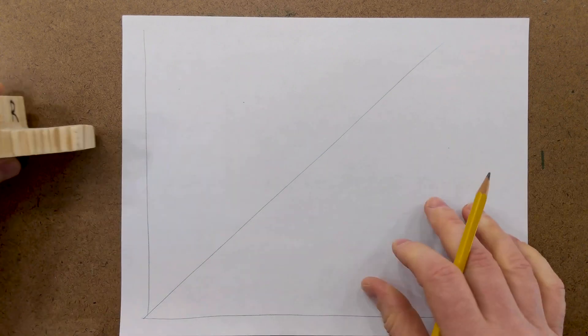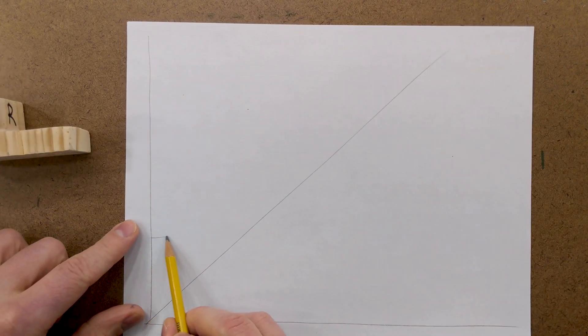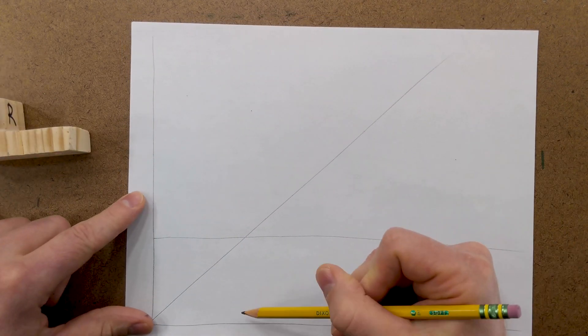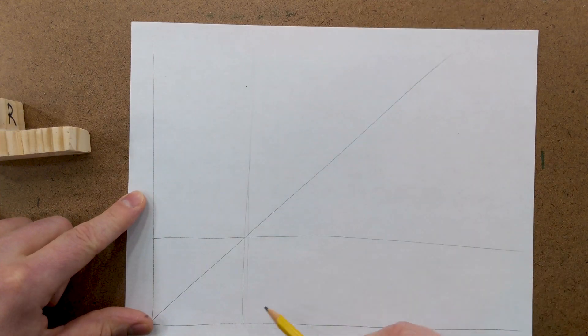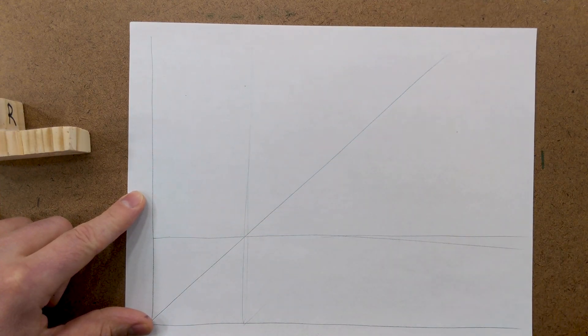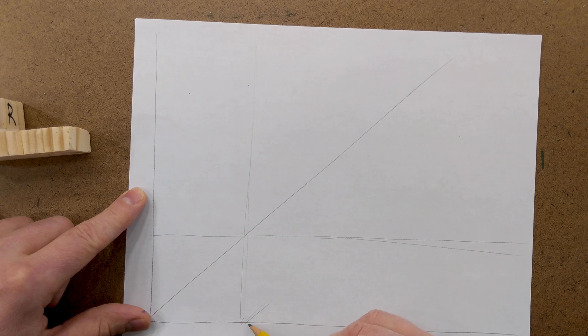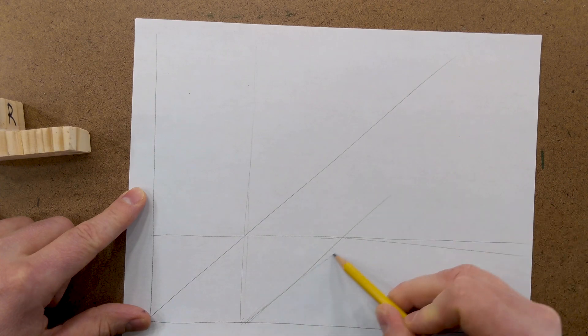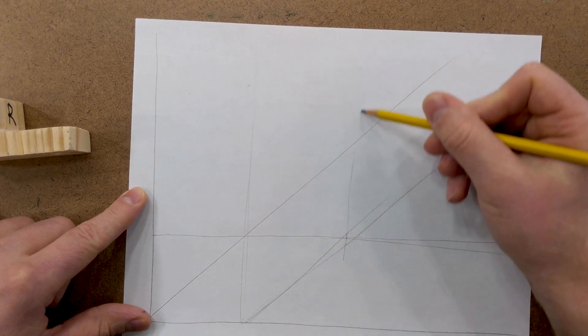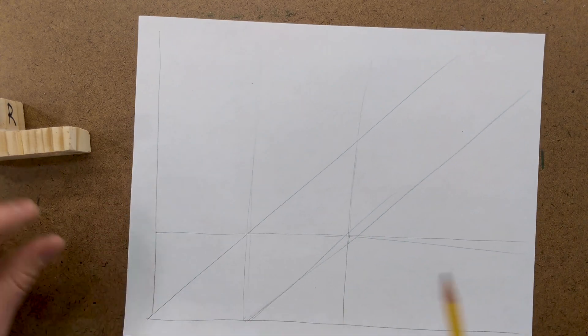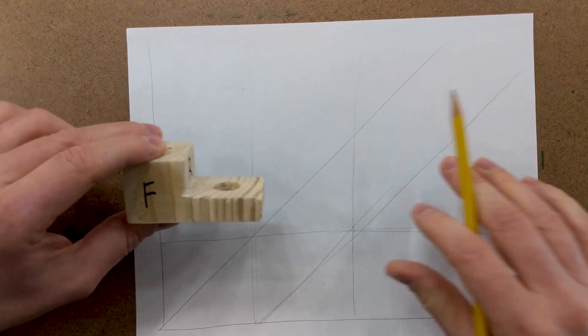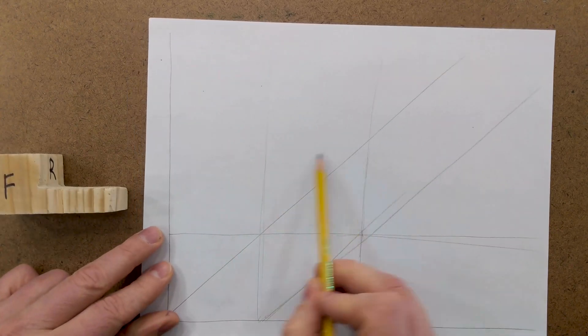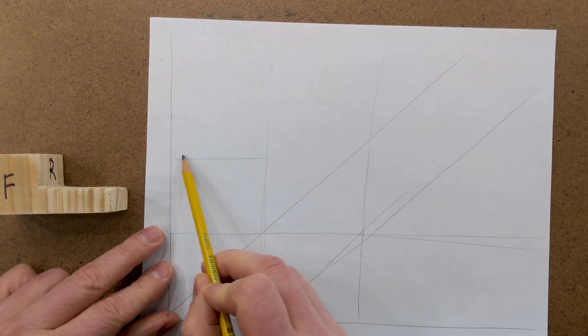And then draw one unit. Let me draw this vertical here, another 45 degree line. Now we have our two units for our front. We can go ahead and box in the top part, and we'll draw across here.